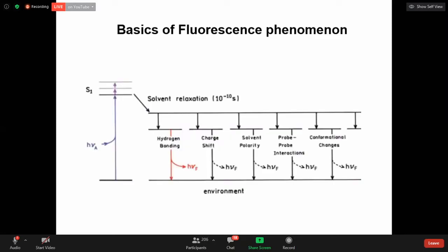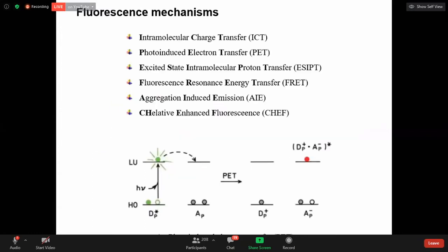And this is the fluorescent phenomenon. Basic fluorescent phenomenon in the environment. When we expose the light to fluorophore, it goes to first singlet state and solvent relaxation. After that hydrogen bonding, charge shift, solvent polarity, probe interaction, conformational changes. So you know enol-keto tautomerism. These are common fluorescence phenomenon which occurs in the environment.